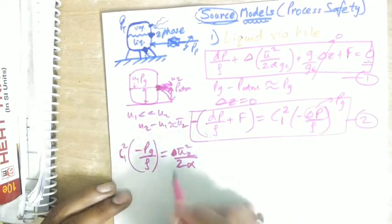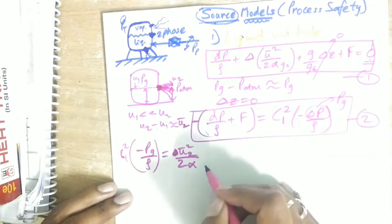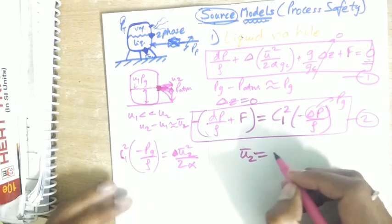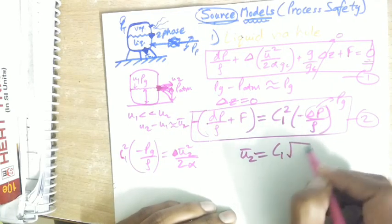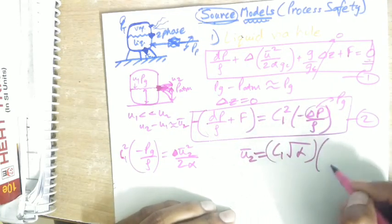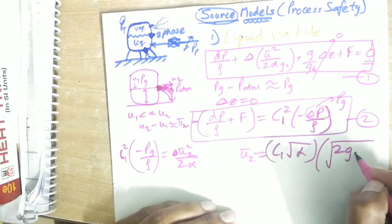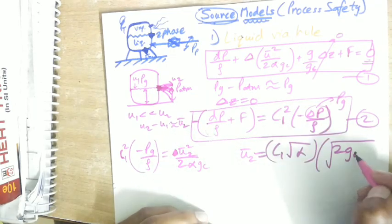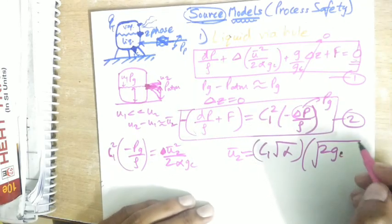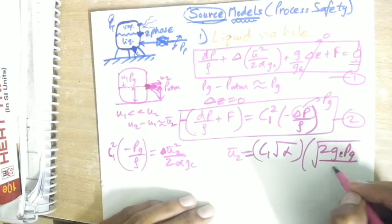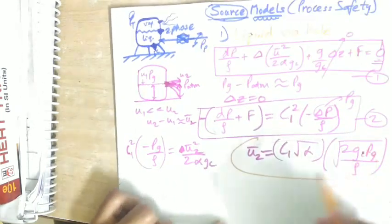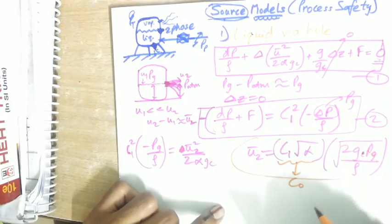u₂ comes out to be C₀√α · √(2gc Pg/ρ). We can take gc = 1 with SI units. Putting this in, let's take this coefficient to be C₀.